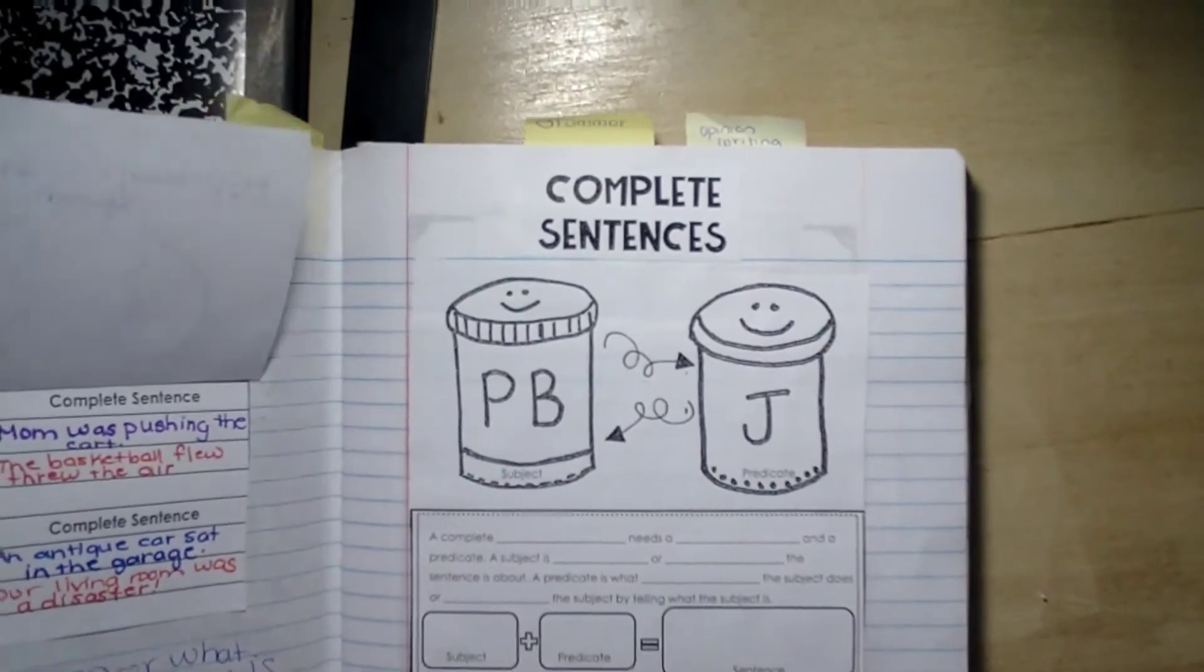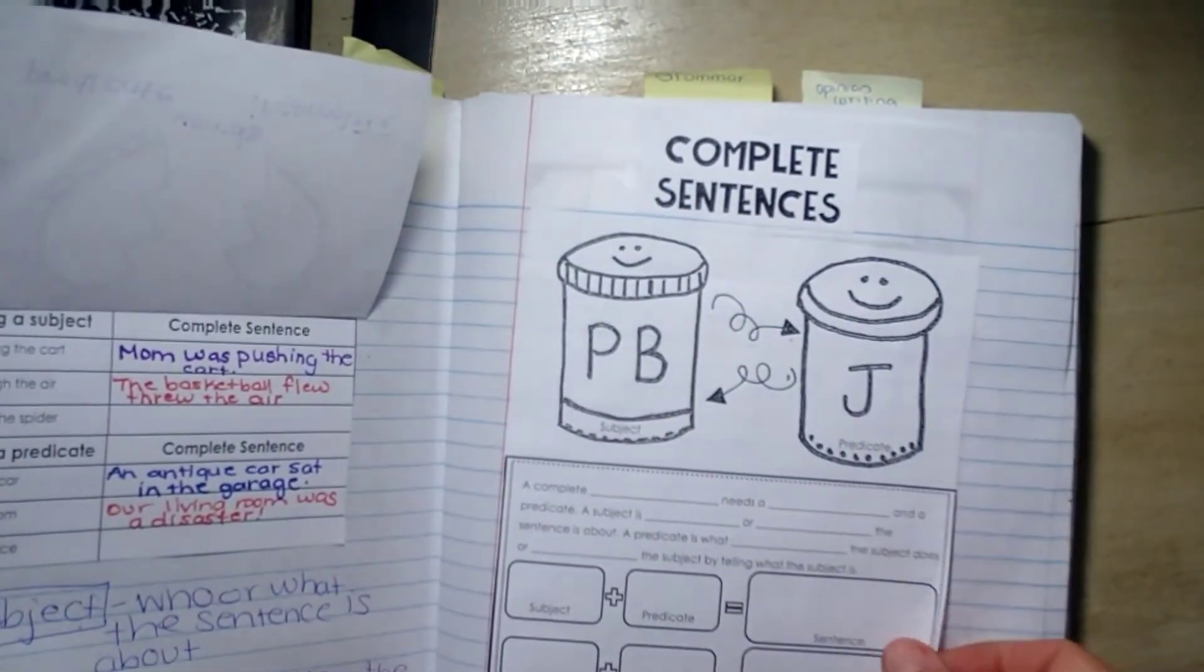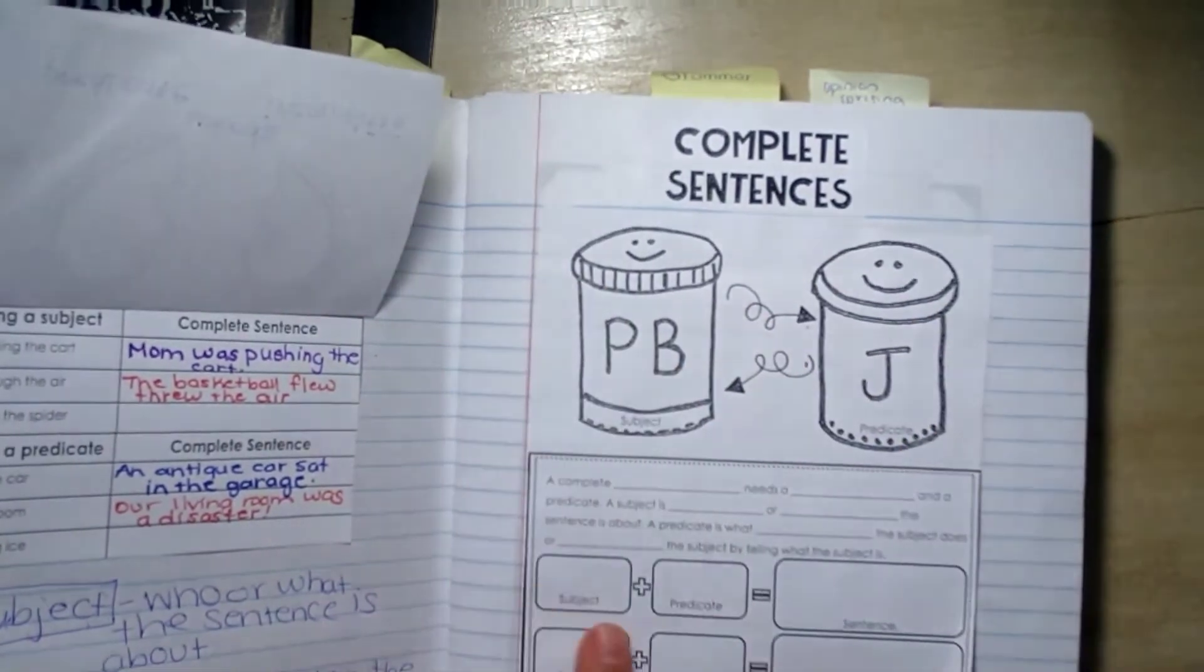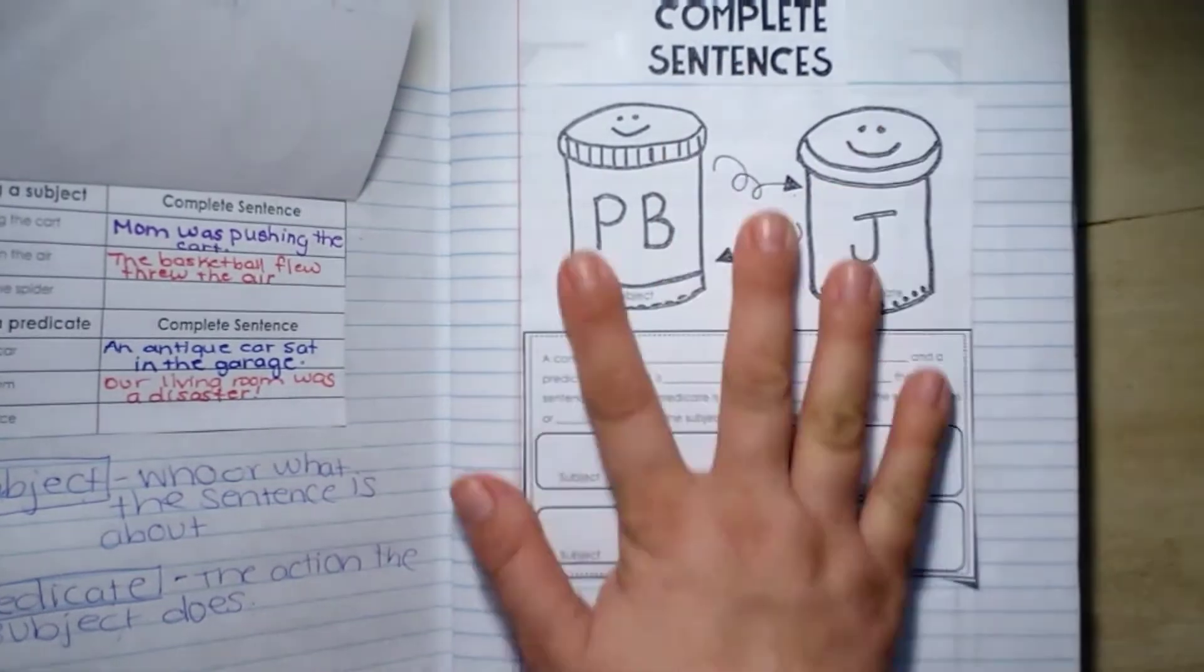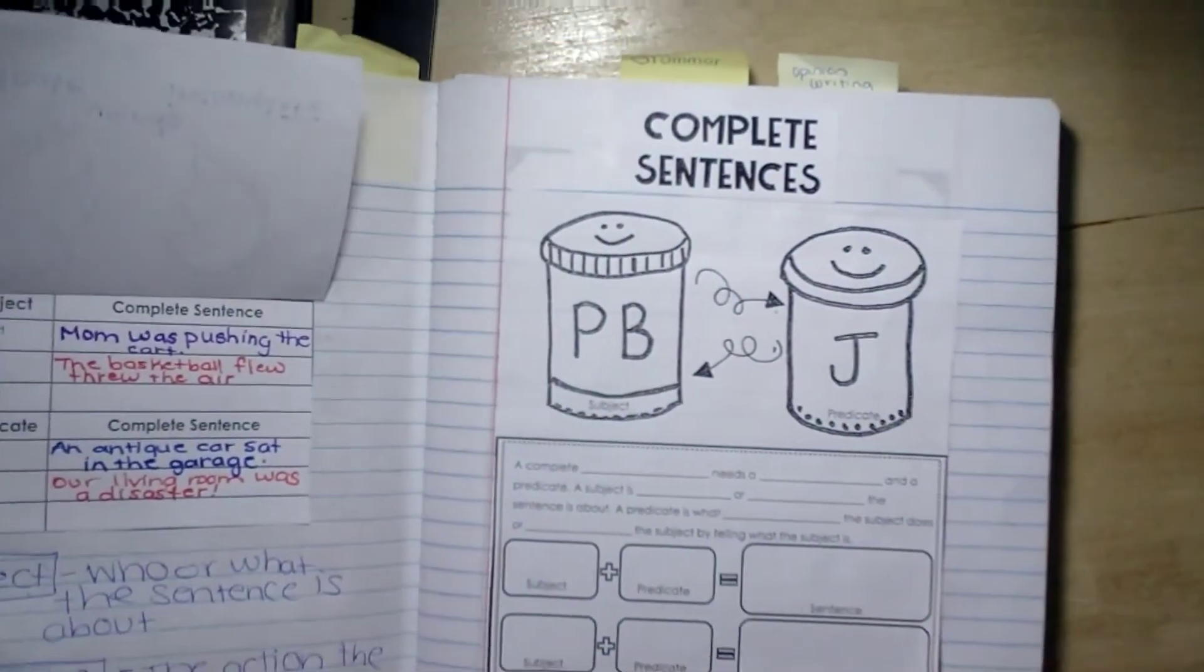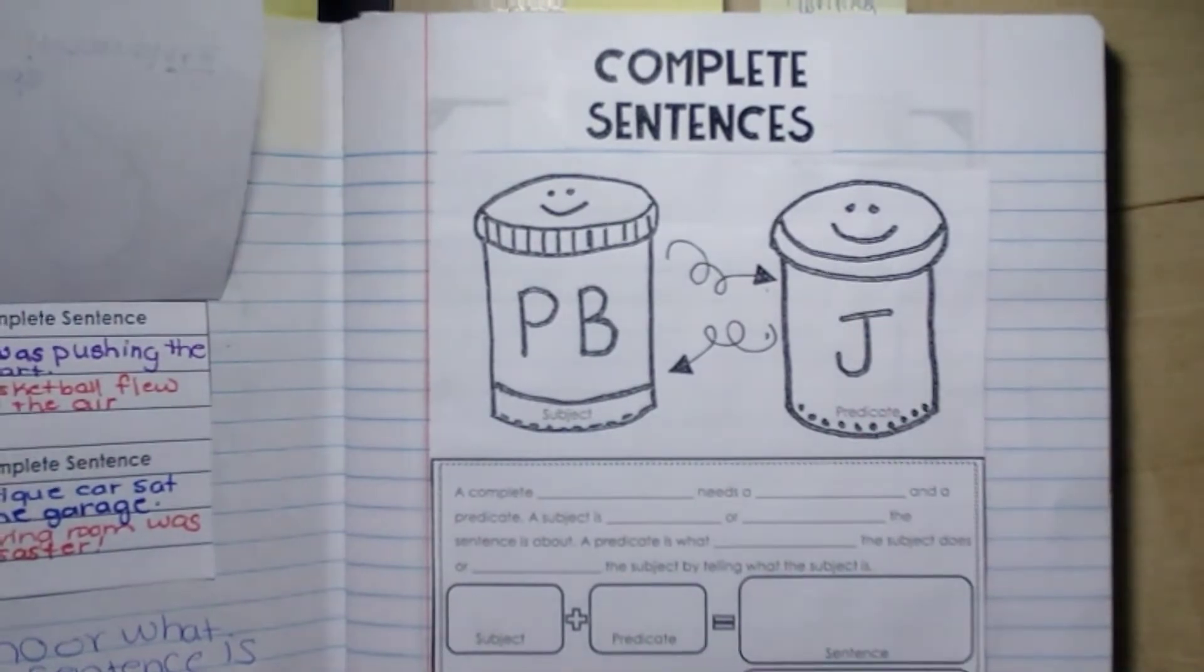Next one is complete sentences. You have the title that needs to be cut out, and this is just a piece of paper and it just needs to be glued flat. There's nothing underneath it, no flip, no nothing. It's just glued down. Okay, complete sentences. Your subject and your predicate goes together like peanut butter and jelly.